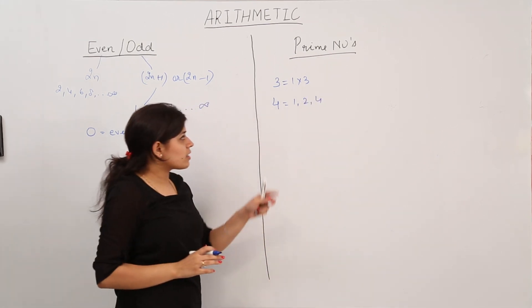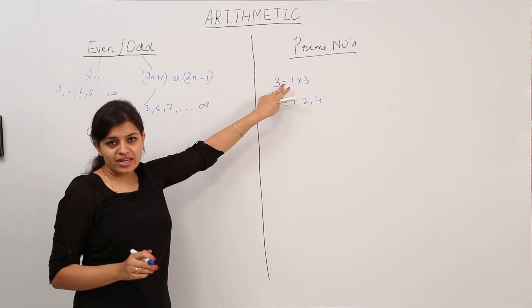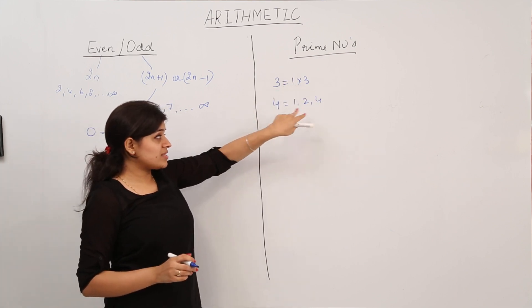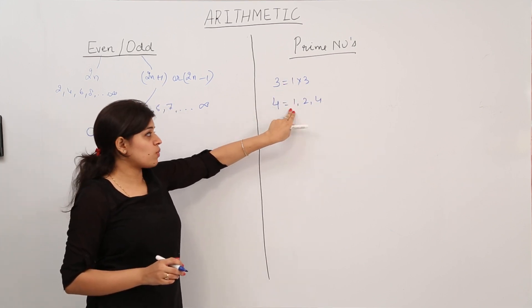So here we can see that the number 3 has only two factors, that is 1 and 3, whereas the number 4 has three factors: 1, 2, and 4.